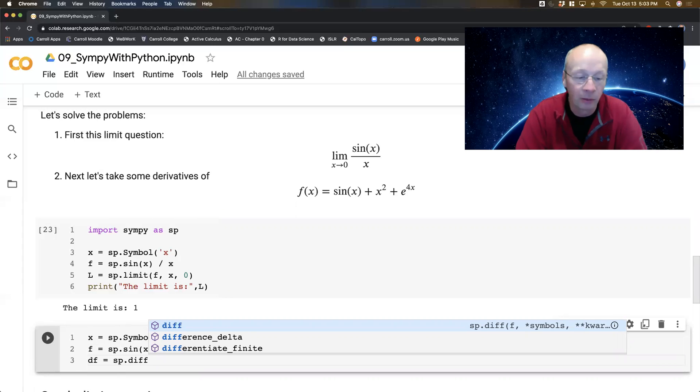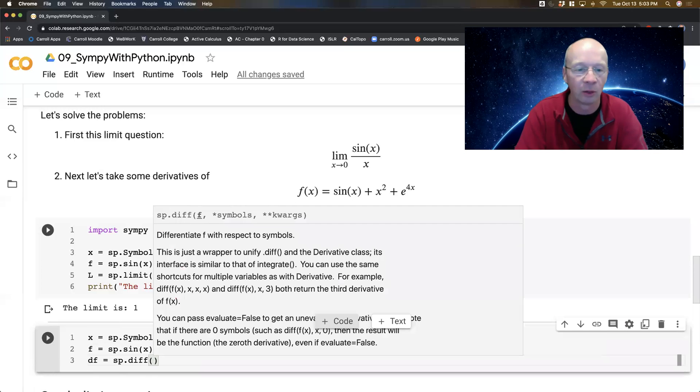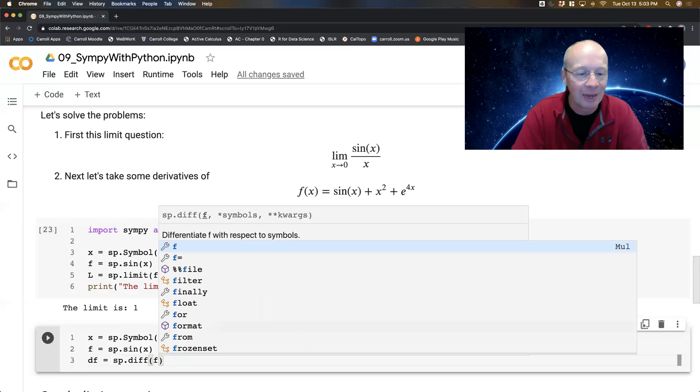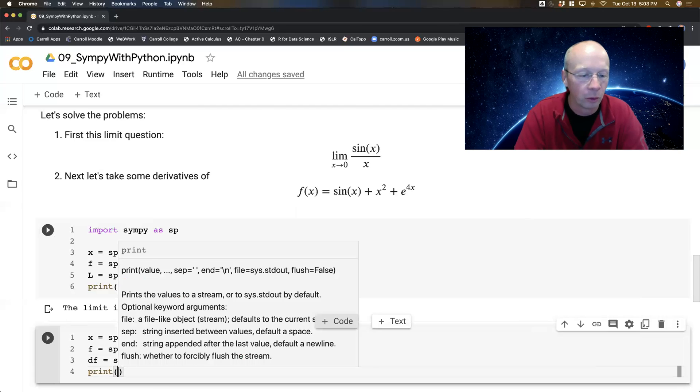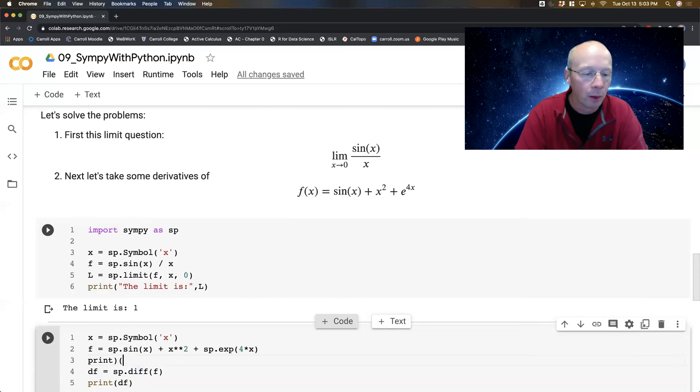So let's do DF for the first derivative is SP dot, and it is usually diff. And of course it is in SymPy. It's actually the same in NumPy too, but the two do vastly different things from a programming standpoint. From a mathematical standpoint, they're trying to get to the exact same thing. So I send F in as my function and I print DF.